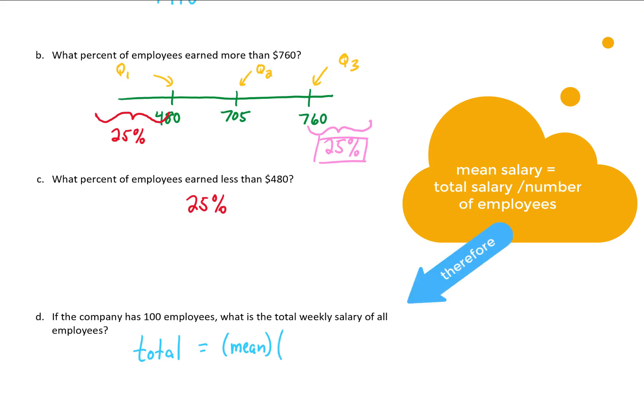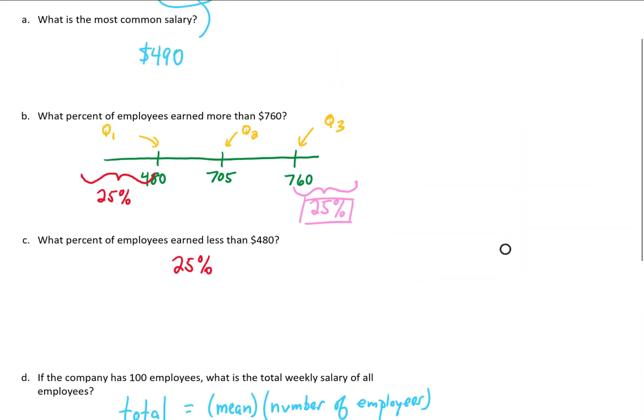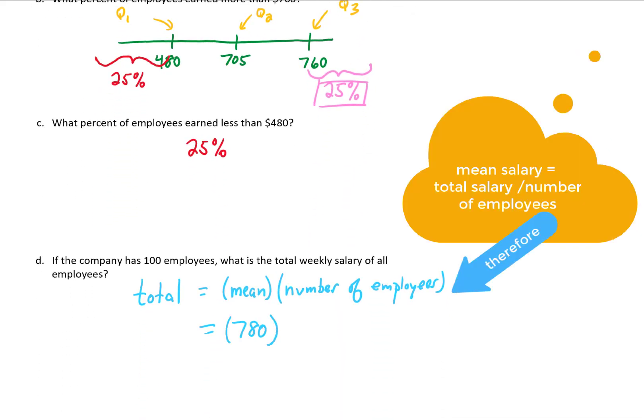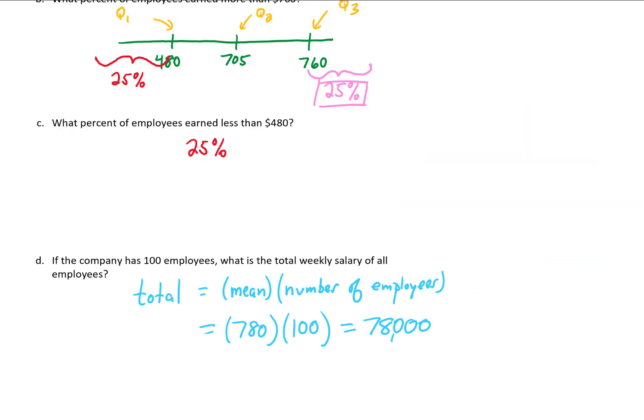We were given the mean in our data up here as $780. So the average employee makes $780. If we multiply that by the number of employees, which is 100, 780 with two more zeros tacked onto it, that's $78,000. Okay, let's check out the next problem.